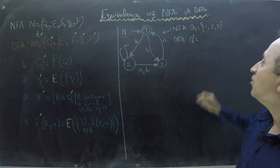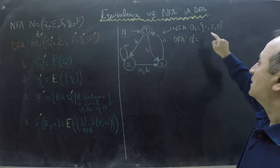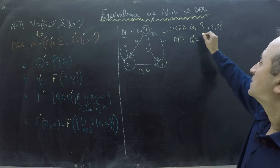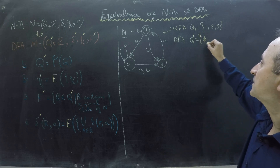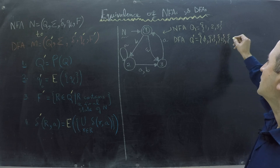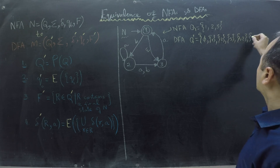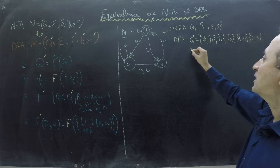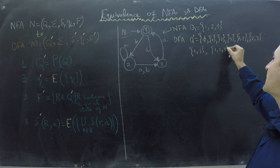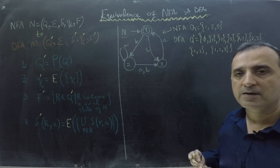The power set contains all the subsets of this set. Since we have three states, the power set will have two raised to the power three, which equals eight states: the empty set, sets containing one, two, three individually, sets containing one-and-two, one-and-three, two-and-three, and finally the set containing one, two, and three. So the number of states in our intended DFA must be eight.